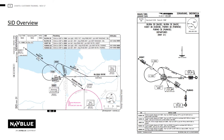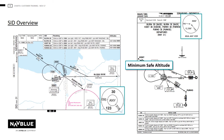In this slide, you can familiarise yourself with the difference between the Jeppesen and NAVBLU SID chart. The minimum sector altitudes (MSA) will be shown in the lower right-hand corner of the chart.